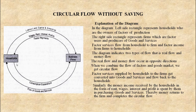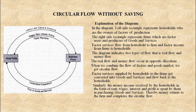From here it is going like this and like this. Factor services supplied by households to the firms — land, labor, capital and enterprise — get converted into goods and services. These firms are giving goods and services to households. Similarly, the money income received by the household in the form of wages, rent, interest and profit is spent by the household in purchasing goods and services. Thereby, money returns to the firm and it completes the circular flow.